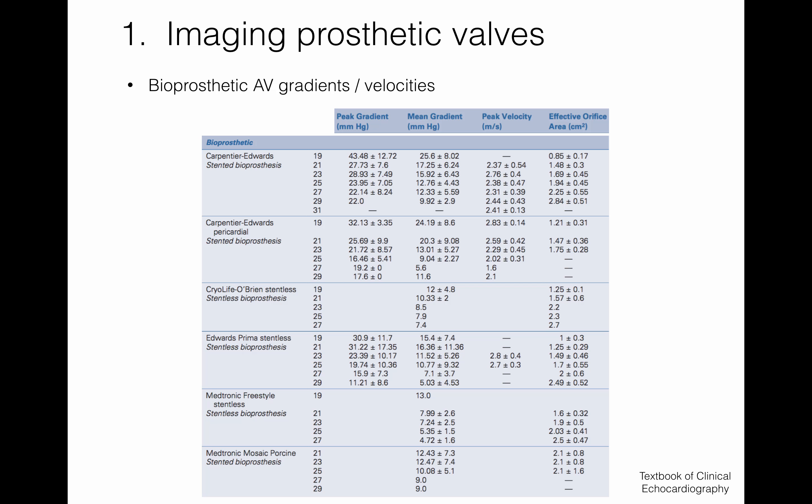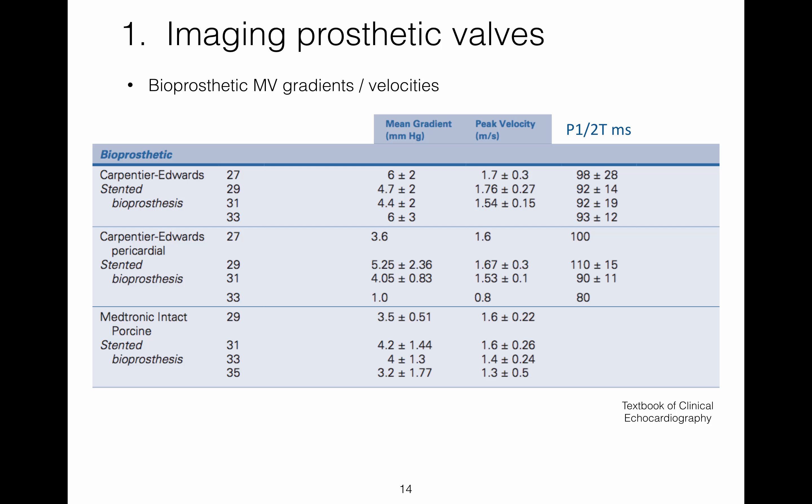Published normal values for bioprosthetic aortic valves are displayed on this slide and available in Catherine Otto's textbook. Notice that the highest peak and mean gradients are once more in the smaller valve sizes. Published normal values for bioprosthetic mitral valves are also available via Catherine Otto's textbook, and as with mechanical mitral valves the values are lower for bioprosthetic mitral valves than they are for bioprosthetic aortic valves.